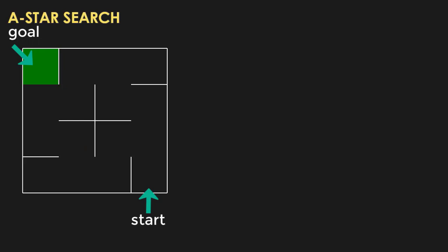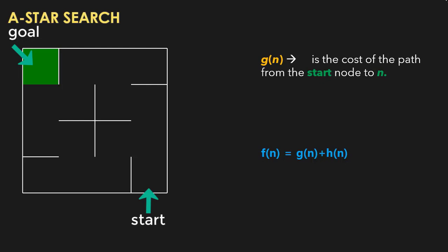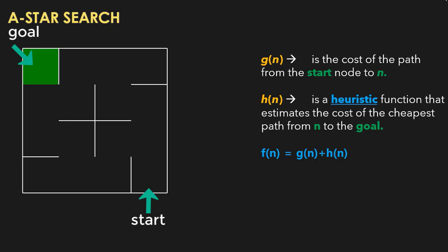Now let's see how this algorithm works. Basically, there is a cost associated with each cell of the maze and A star will try to select the path with minimum cost. F of n is the cost of a node or cell, and it has two components: G of n and H of n. G of n is the actual cost to reach from the start node to node n — it is the number of steps to reach that cell from the start. H of n is the heuristic cost, which is the estimated cost to reach the goal.